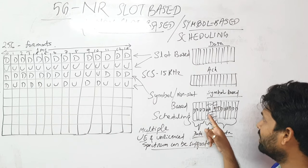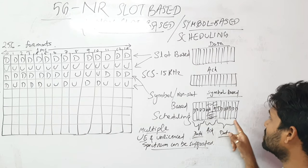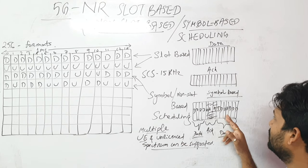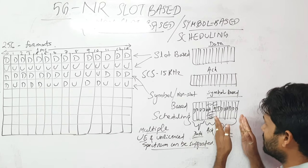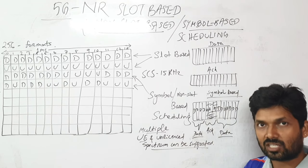Then sending again data in the next three, four, five, six, seven symbols. So the second part of the slot I'm using for again downlink or retransmission.